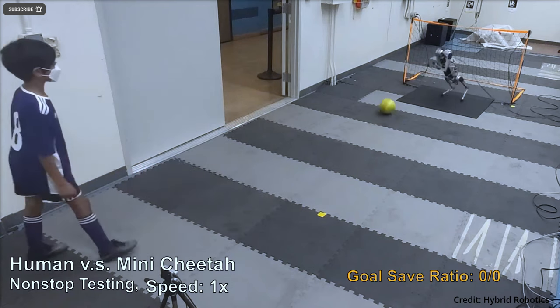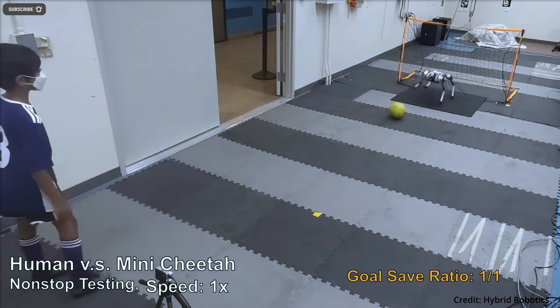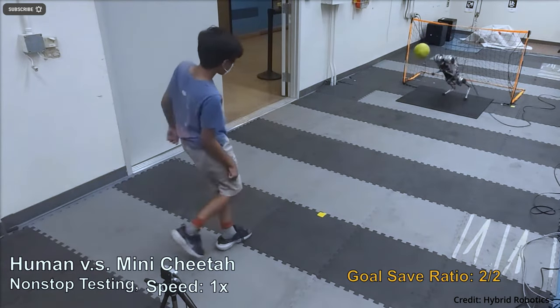The Mini Cheetah, which was the nickname given by the Biomimetic Robotics Laboratory at MIT, had to block the ball with dynamic locomotion movements within less than a second.